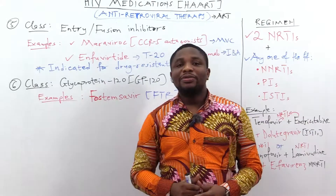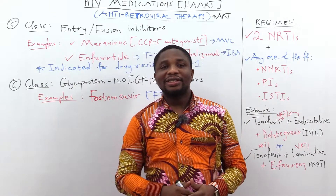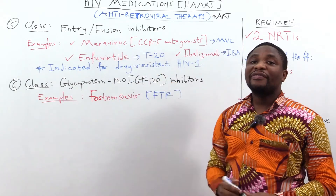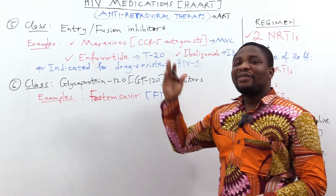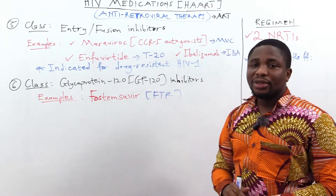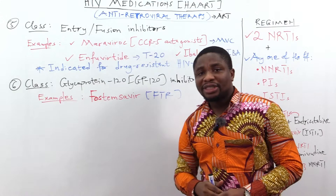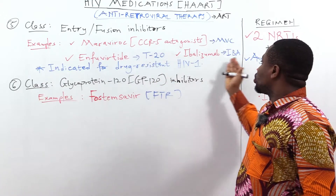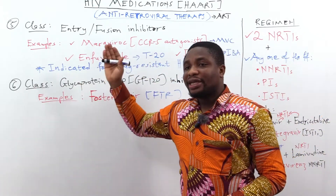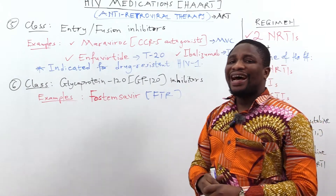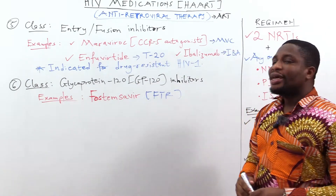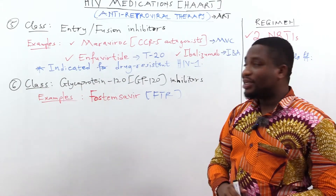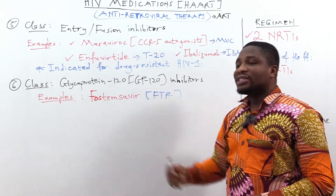The adverse effects of protease inhibitors can be remembered with the mnemonic HELP: H is hyperglycemia, E is nephrolithiasis, L is lipodystrophy, and P is P450 blockade — they block cytochrome P450 enzymes. The next class is the entry and fusion inhibitors, with examples including maraviroc (MVC), a CCR5 antagonist; enfuvirtide (T20); and ibalizumab (IBA). These are indicated for drug-resistant HIV-1. The final class is the glycoprotein 120 inhibitors, with an example being fostemsavir (FTR).